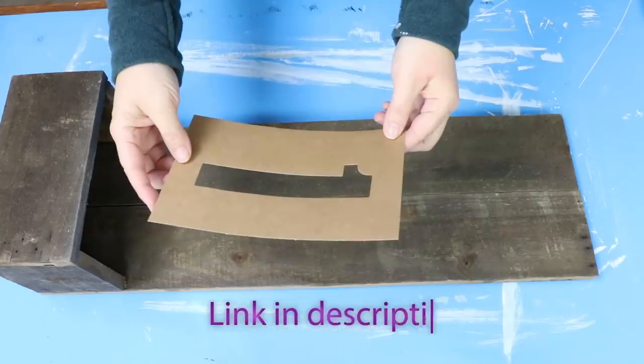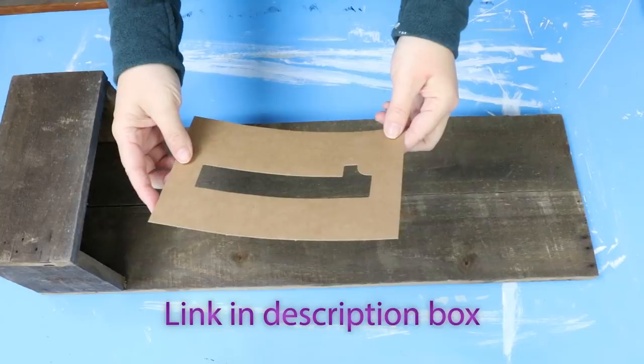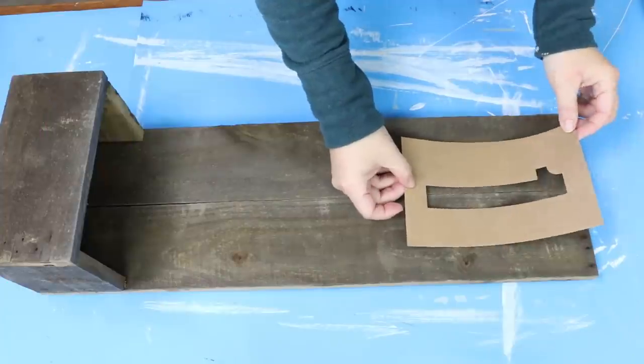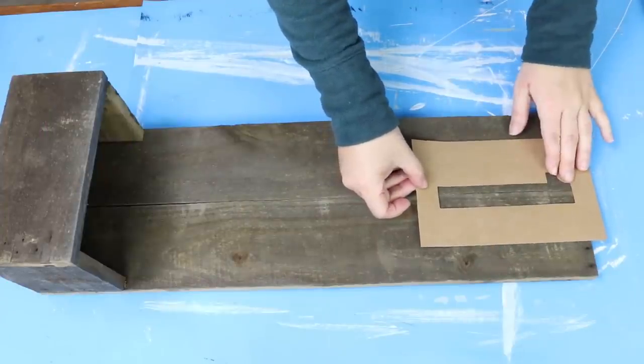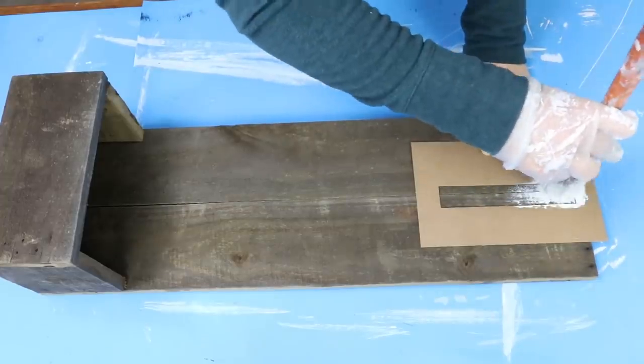I'm going to be stenciling on house numbers and I picked up a set of numbers off of Amazon, so all you're going to do is put your numbers out and then I'm going to do one light coat with Waverly white chalk paint. I wanted this to look really rustic so it doesn't have to be perfect at all.